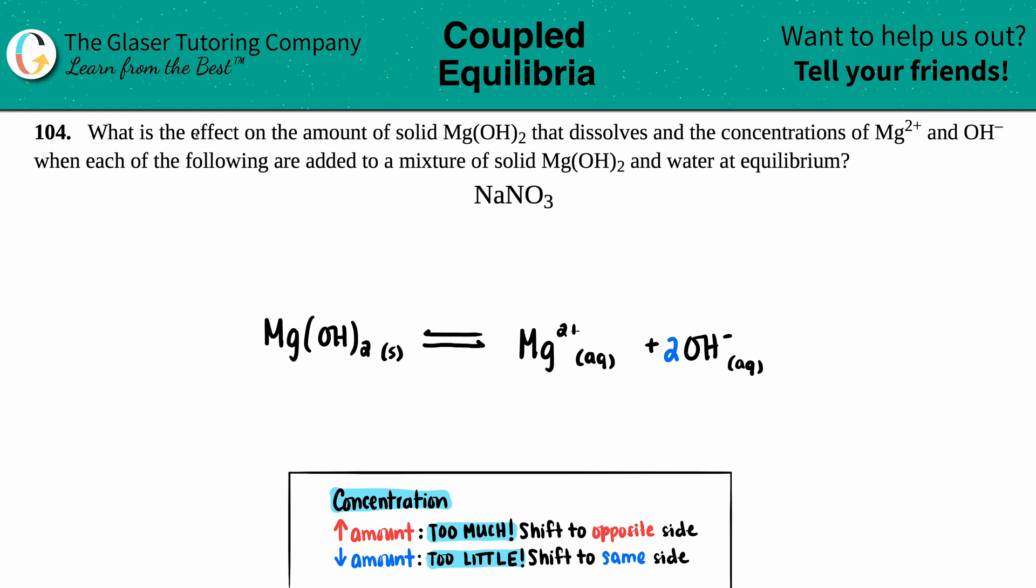Number 104. What is the effect on the amount of solid Mg(OH)2 that dissolves and the concentrations of Mg2+ and OH- when each of the following are added to a mixture of solid Mg(OH)2 and water at equilibrium? Then we have, we're adding sodium nitrate, which is NaNO3.